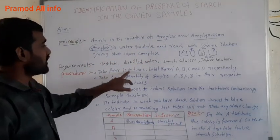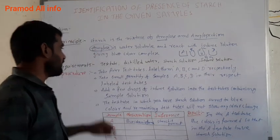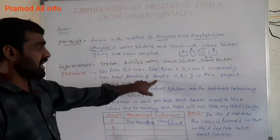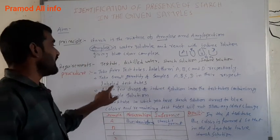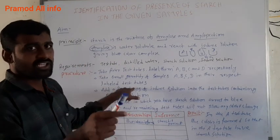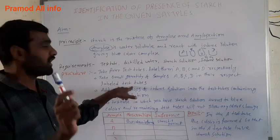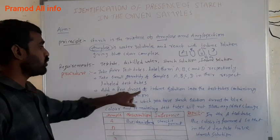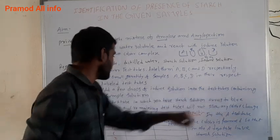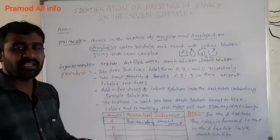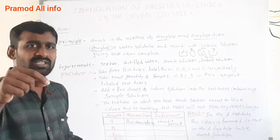Take four test tubes, label them A, B, C, D respectively. Take small quantities of samples A, B, C, D in their respective labeled test tubes. Then add a few drops of iodine solution into all the test tubes containing sample solutions.